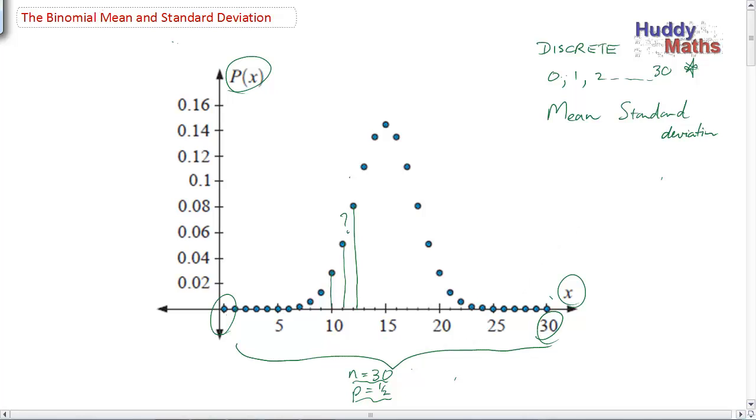So 30, you'd say, well, 30 trials, probability of a success with a half, I would say NP would be the mean, which would be 15. And we've got a highest probability at 15, and a symmetrical distribution either side. Now, we saw a bit of this back in the first presentation on the binomial. Now, we're not going into a broad mathematical analysis of this. But as part of the course, we want to find the mean and the standard deviation.